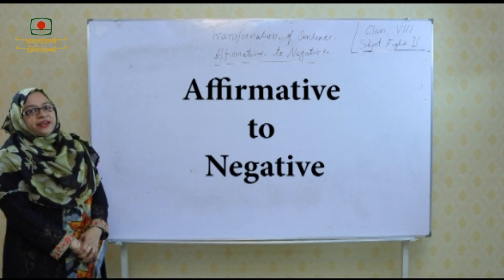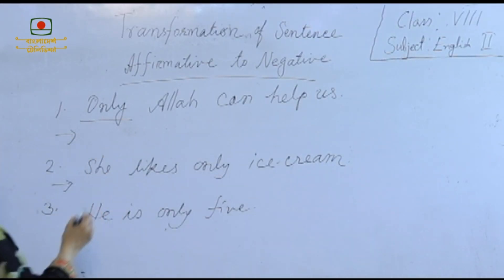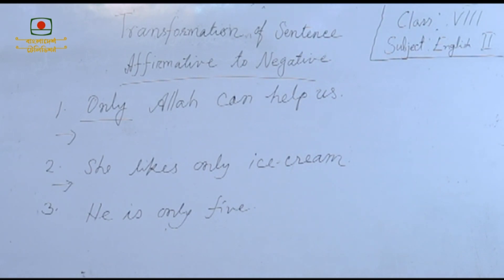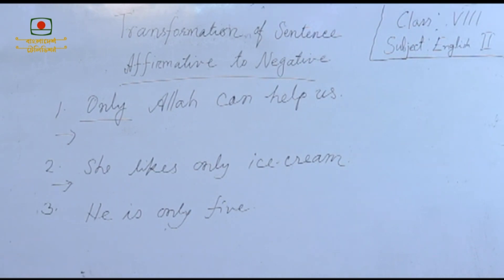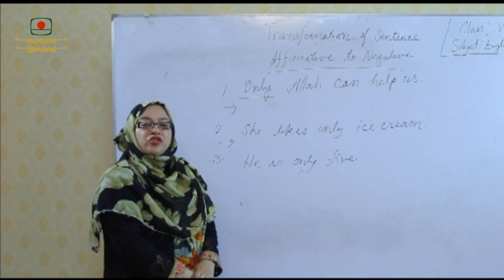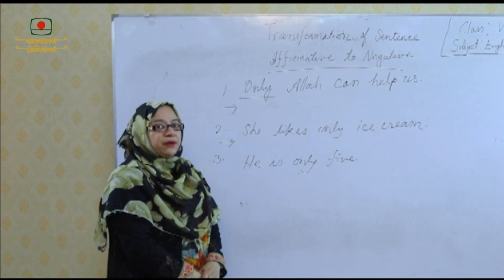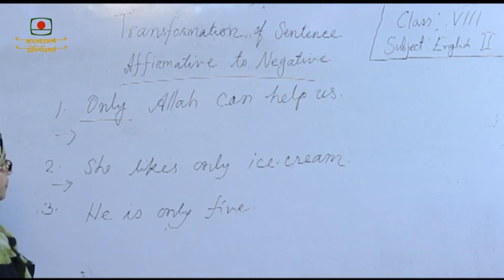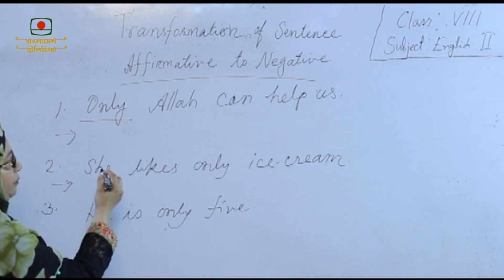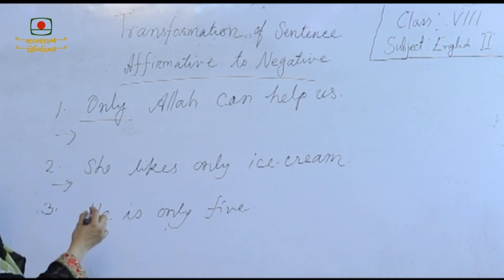Affirmative to negative: if there is 'only' in an affirmative sentence, we use 'none but' for a person in the negative sentence, 'nothing but' for a thing, and 'not more than' or 'not less than' for a number. So we turn it into negative by following these rules.